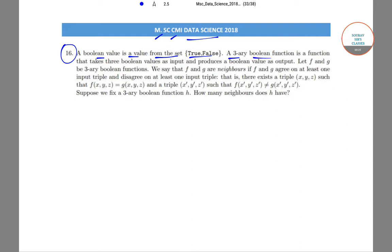Now a 3-ary boolean function is a function that takes three boolean values as input and produces a boolean value as output.